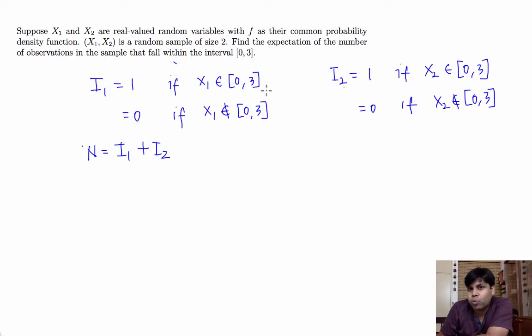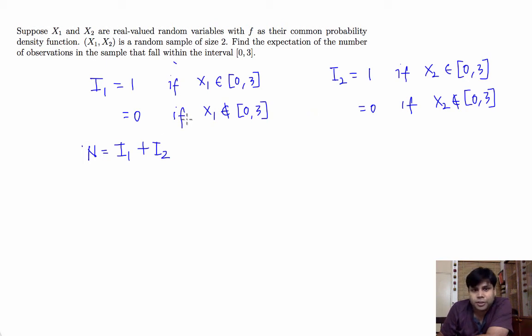N will take value 1 if one of them takes value 1 and the other takes value 0, and it takes value 0 if both take value 0 — meaning both x1 and x2 lie outside the interval 0 to 3.